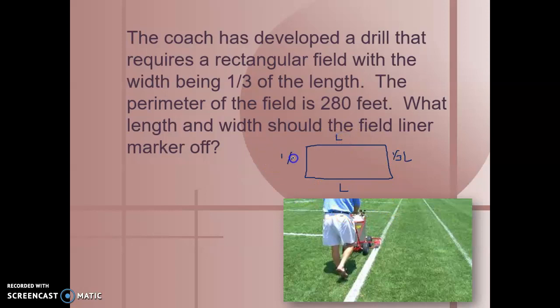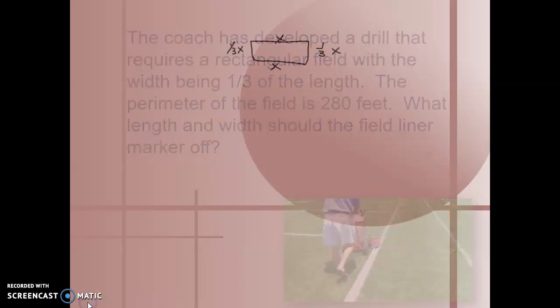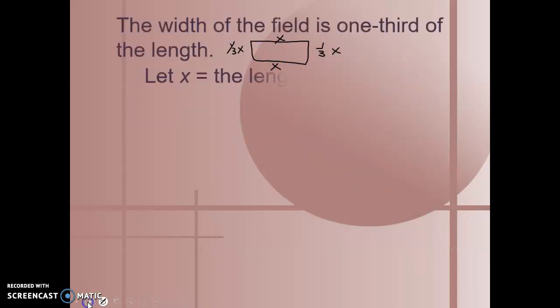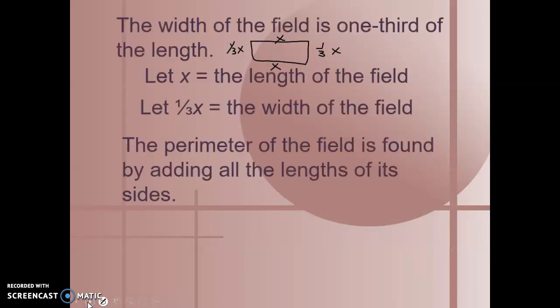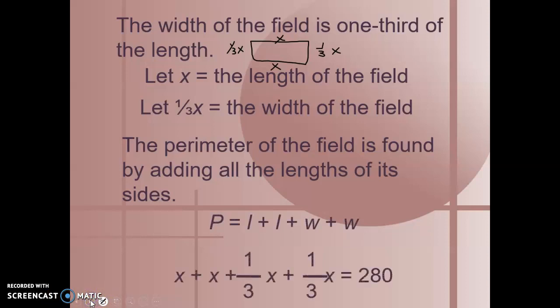And I know if I add all of these four sides together, I'm going to get 280 feet. So L plus one-third L plus L plus one-third L equals 280. And we can use that with any variable, x or L, or whatever you like. I like to use L because it reminds me what I'm trying to find. We know the perimeter is found by adding all sides, so we're going to plug in our numbers there: x plus x plus one-third x plus one-third x equals 280.